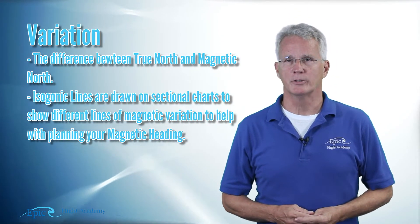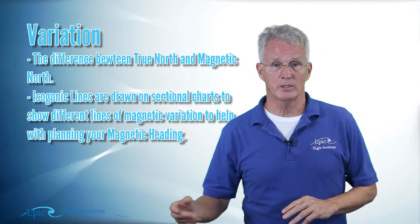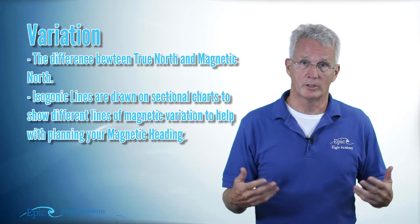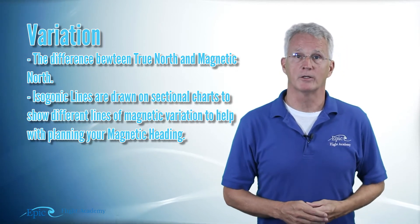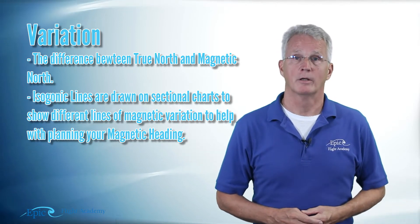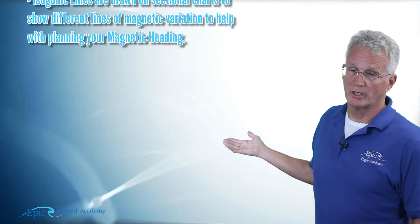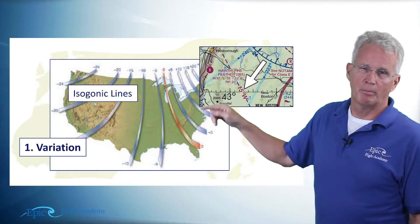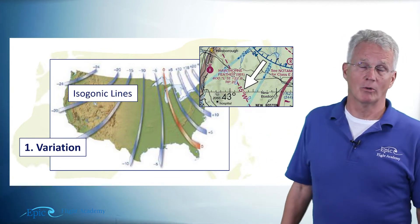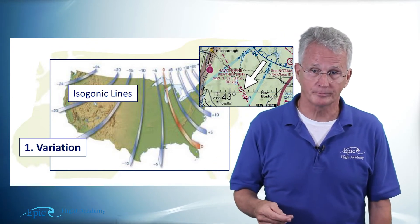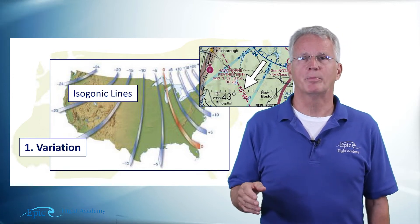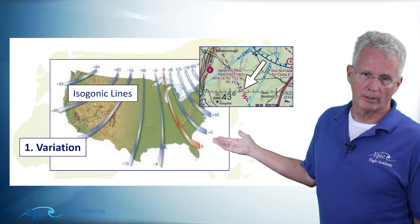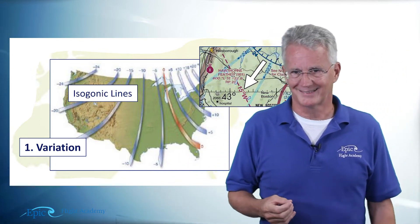Variation will get greater the further east and further west I go. There are some nice graphics in your materials that show you this. You'll also find a good picture of it in the Pilot's Handbook of Aeronautical Knowledge. In this graphic, you can see an example of isogonic lines, both east and west. Notice this pinkish-orange colored one that shows zero variation — that is the agonic line. These lines of variation are depicted on your sectional chart by dashed magenta lines, and you can see an example here. The large arrow is pointing to 15 degrees west — that's variation.